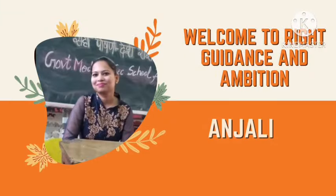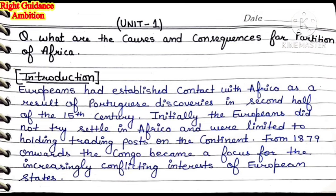Hey everyone, welcome to Right Guidance and Ambition, my name is Anjali. In this video I am going to discuss a question in History 4th semester, Unit 1. This topic is imperialism and partition, and I forgot to add a question — so in this video I am going to discuss Unit 1, the last question which is based on the partition of Africa.